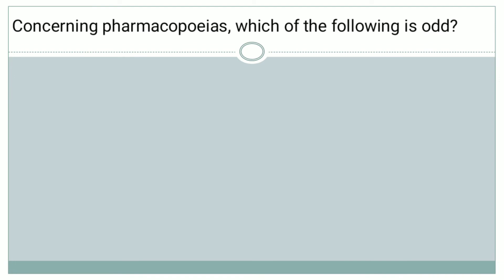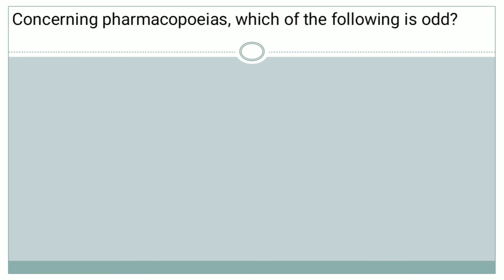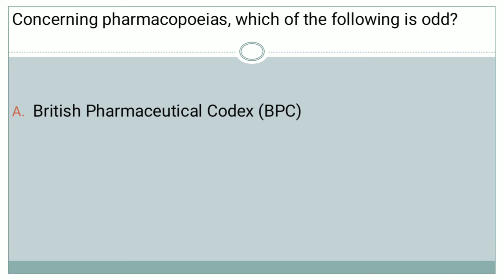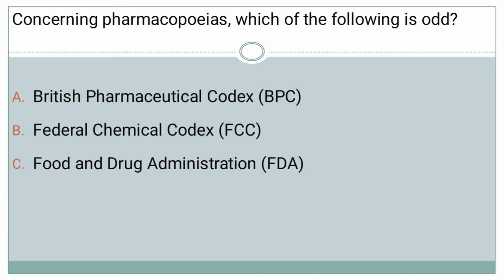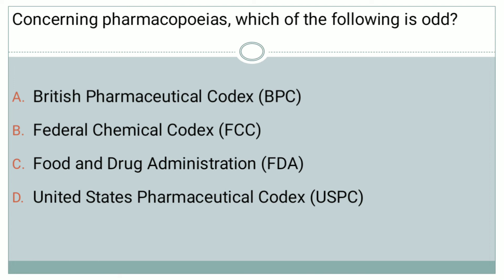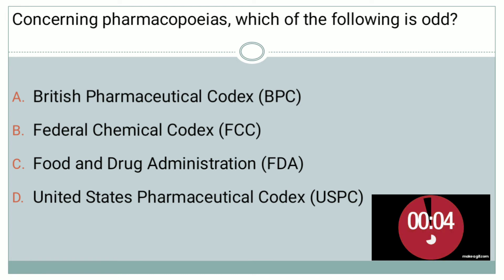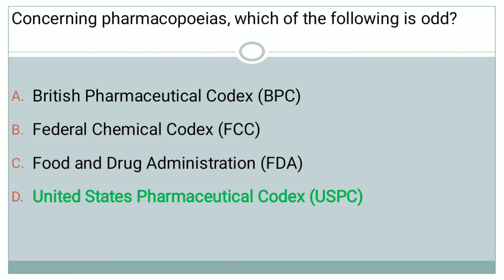The next question: Concerning Pharmacopeias, which of the following is odd? Option A: British Pharmacopeia Codex (BPC), Option B: Federal Chemical Codex (FCC), Option C: Food and Drug Administration (FDA), Option D: United States Pharmacopeia Codex (USPC). The right answer is Option D, that is USPC.